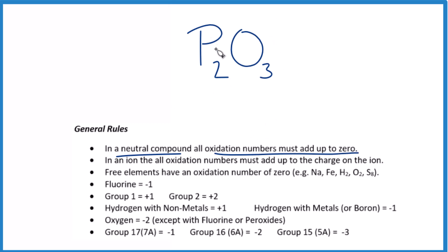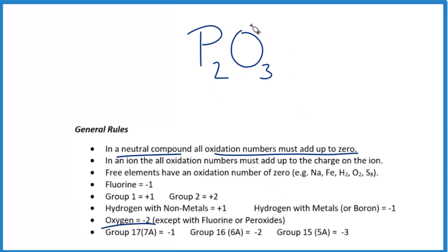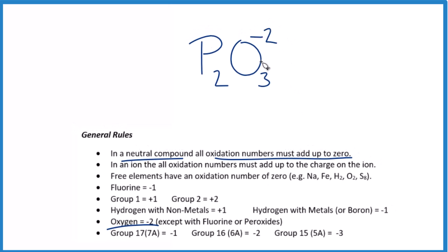We can also see we don't know for phosphorus what its oxidation number will be, but we do know that oxygen is negative two with a few exceptions. So each oxygen atom has an oxidation number of negative two.